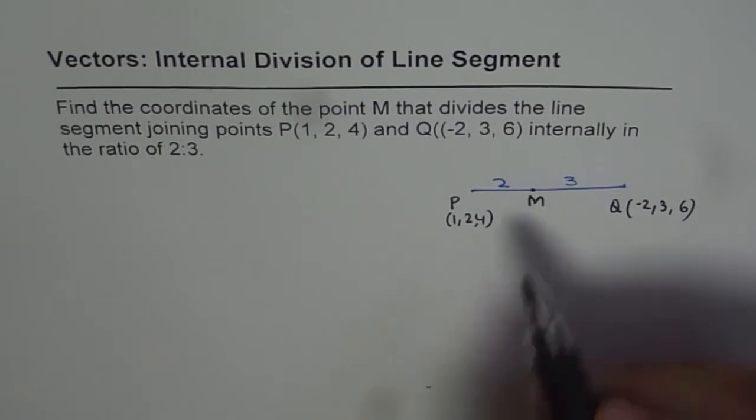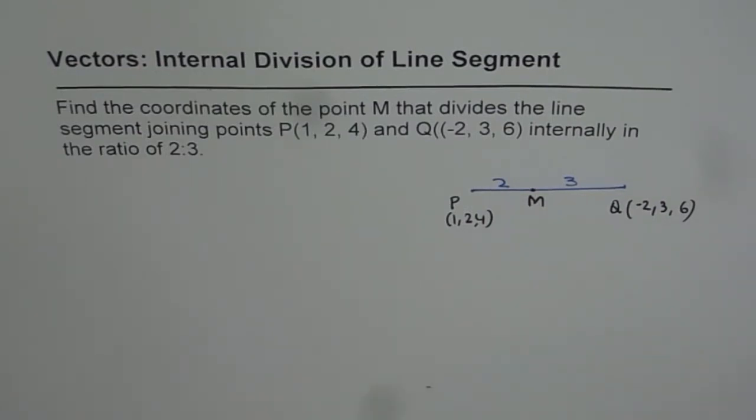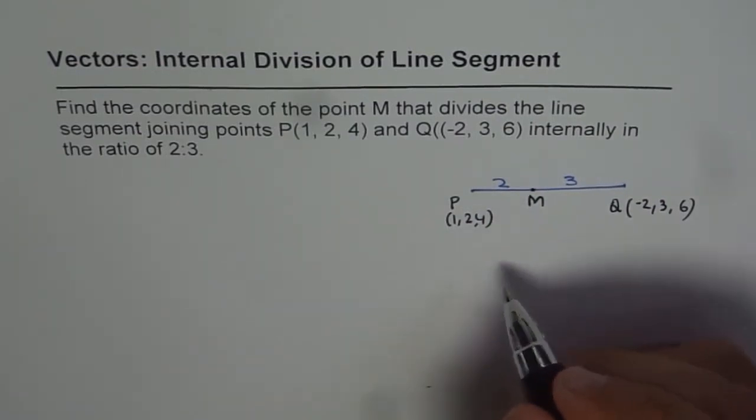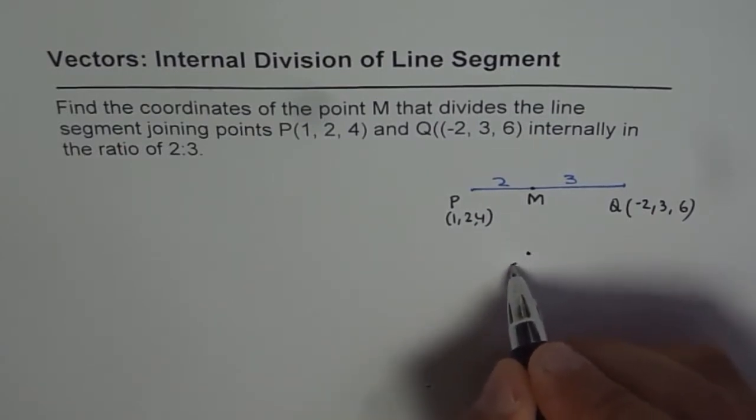To find point M, let us consider a point O which is the origin. Let us consider point O as (0, 0, 0).